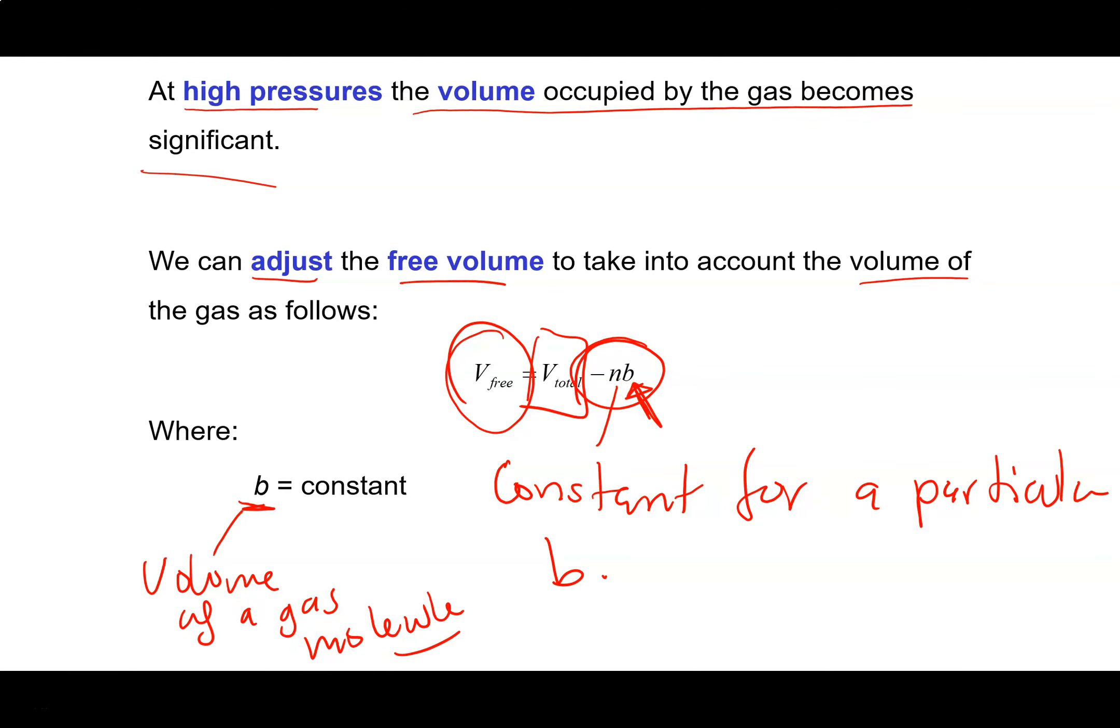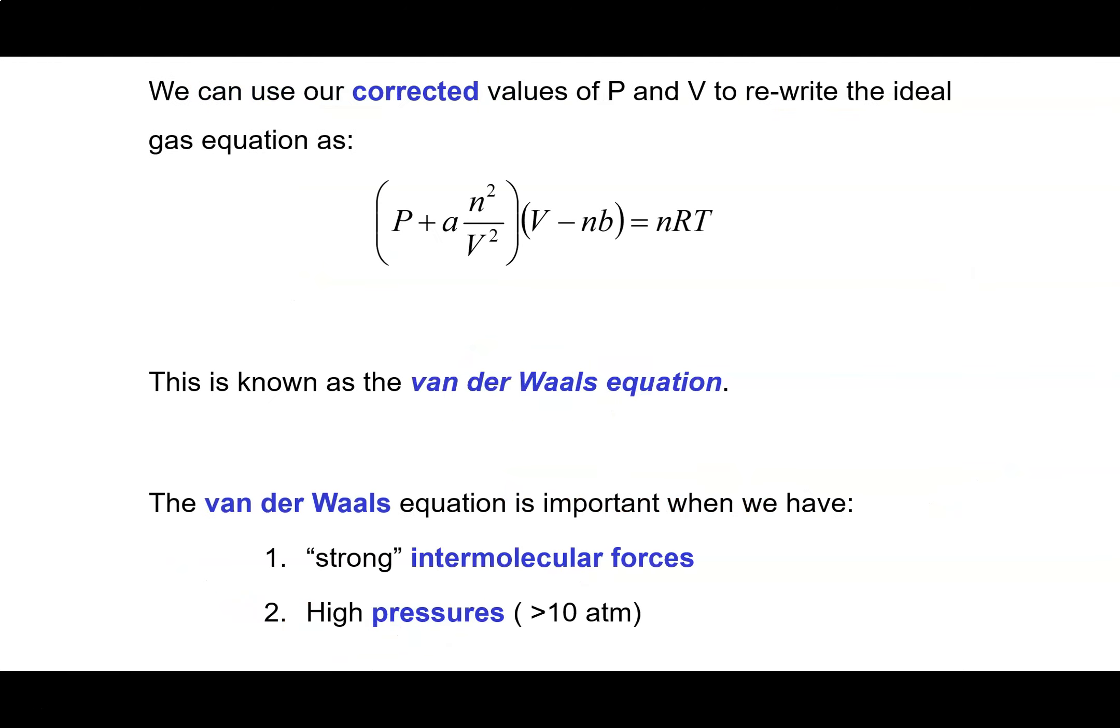We can put this together. Here's our corrected pressure, and here's our corrected volume. We corrected pressure because molecules attract one another, and we corrected volume because molecules take up space. This gives us the Van der Waals equation.